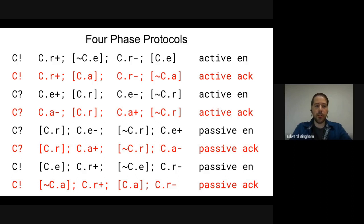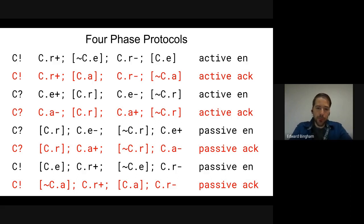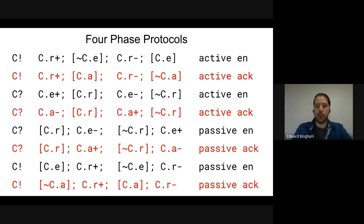This just inverts the sense. So instead of lowering the enable in response to a request from the sender, we raise the acknowledge. Again, this is in a way a rotation of the handshake between the sender and receiver.